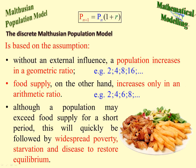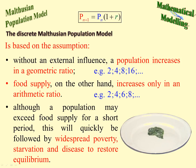Populations may exceed the food supply for a short period, but this will be quickly followed by widespread poverty, starvation, and disease to restore the equilibrium. So populations have a bit of a yo-yo effect, where they increase, and then because of the strain the population numbers put on the environment, they decrease again, and then the food supply can increase, and so on.